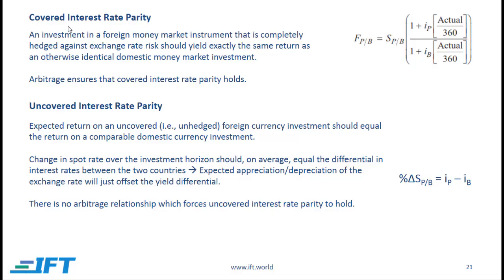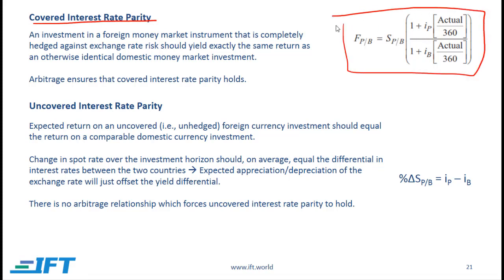Let's go over the various relationships. The first one is covered interest rate parity, which we've seen before. Covered interest rate parity is reflected by this relationship: an investment in a foreign money market instrument that is completely hedged against exchange rate risk should yield exactly the same return as an otherwise identical domestic money market investment.